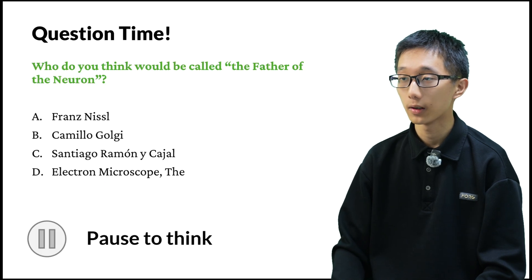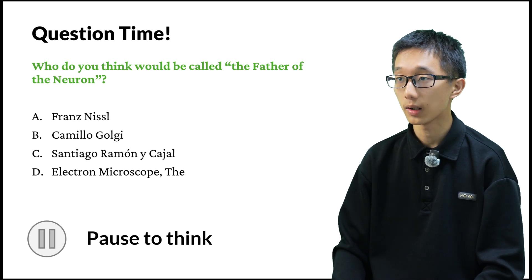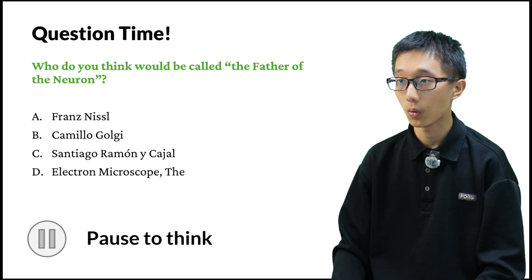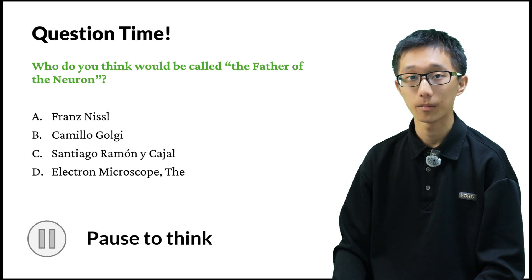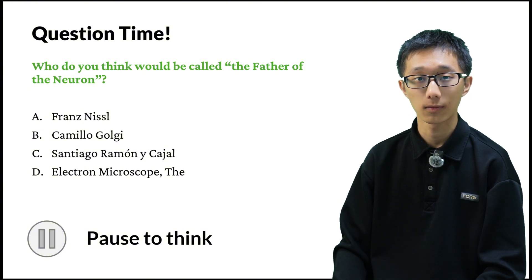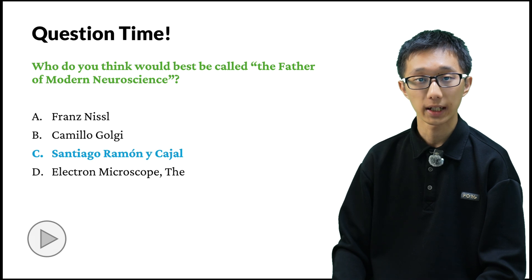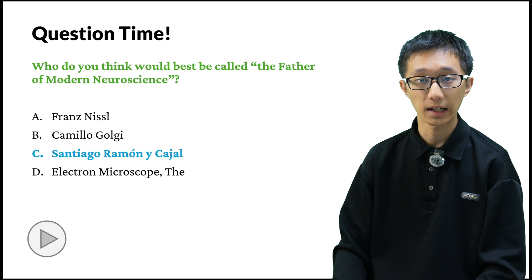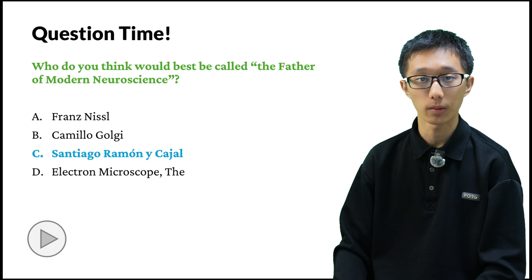Question: who would be called the father of the neuron? Was it Franz Nissl, Camillo Golgi, Santiago Ramón y Cajal, or the electron microscope? If you said Santiago Ramón y Cajal, you're right. He came up with the neuron doctrine, which states that neurons are individual cells. This is what modern-day neuroscience is built upon, because all the things we do are based on the fact that neurons are individual cells.